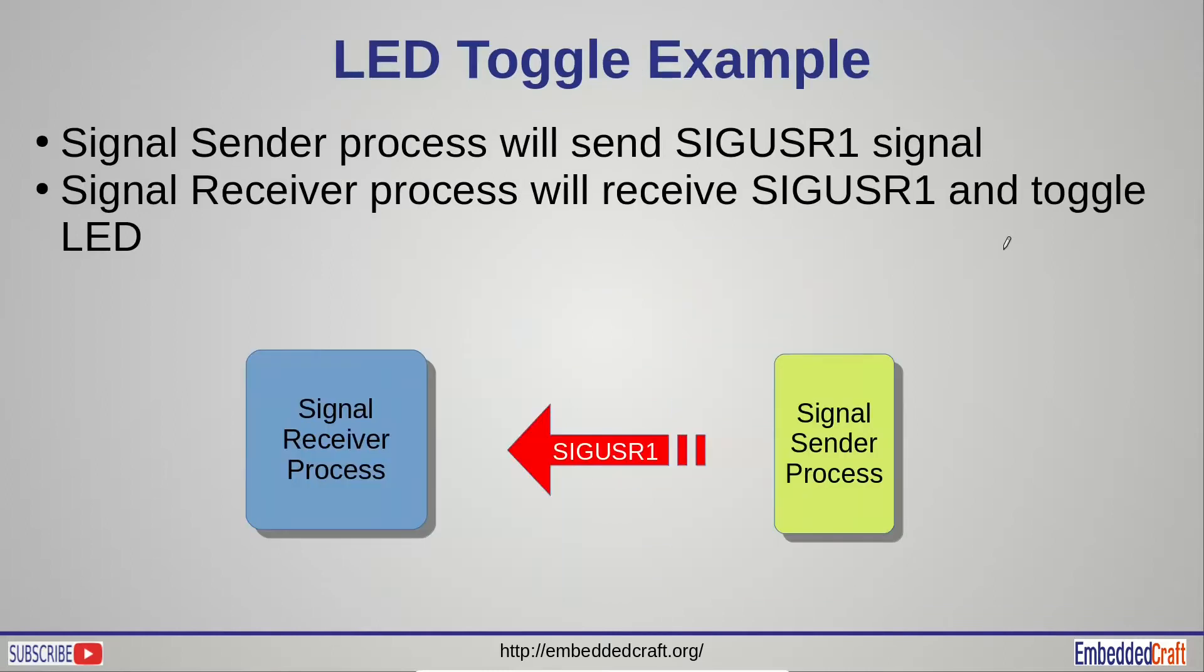Let us focus on our experiment, which is LED toggling upon receiving a signal. We will use LED toggle example. We have two processes. One process will be signal receiver. Another process will be signal sender. Signal sender process will send SIG USR1 signal to signal receiver process, and signal receiver process will toggle LED.